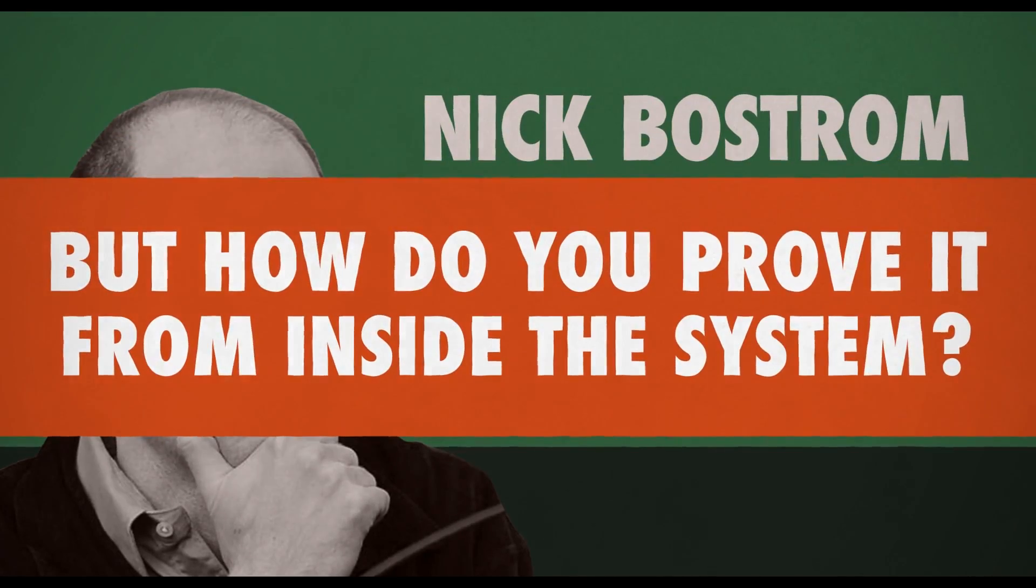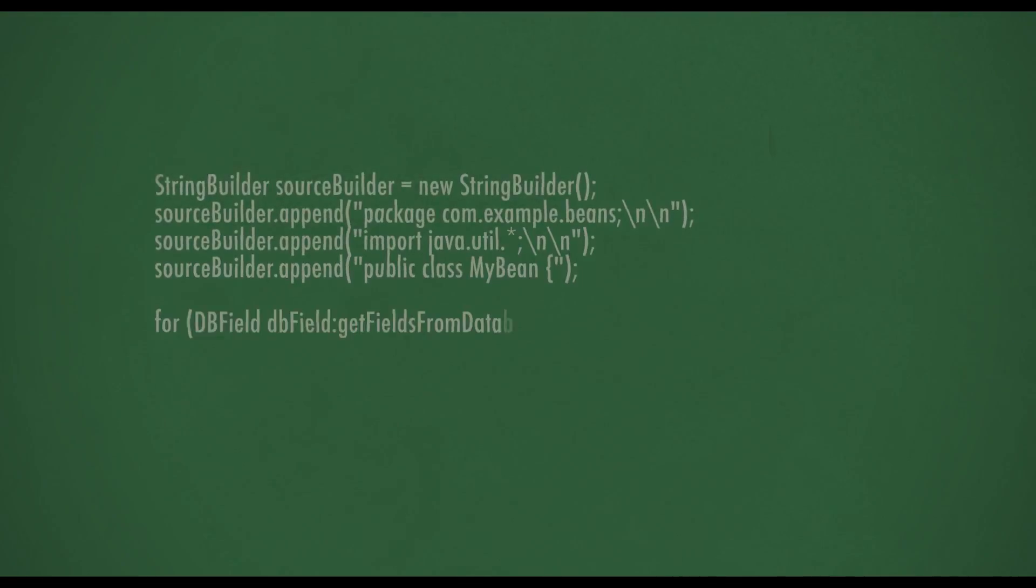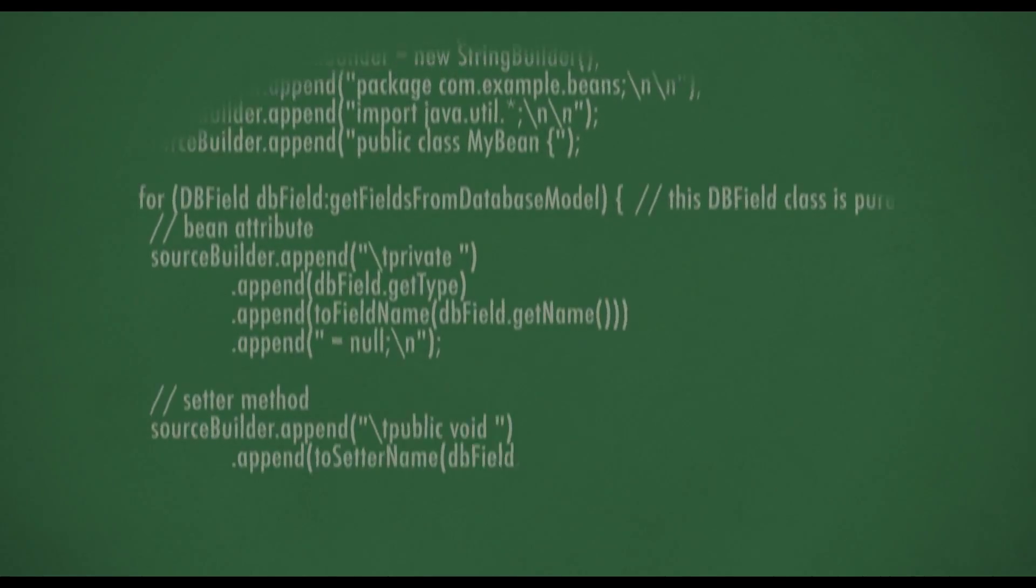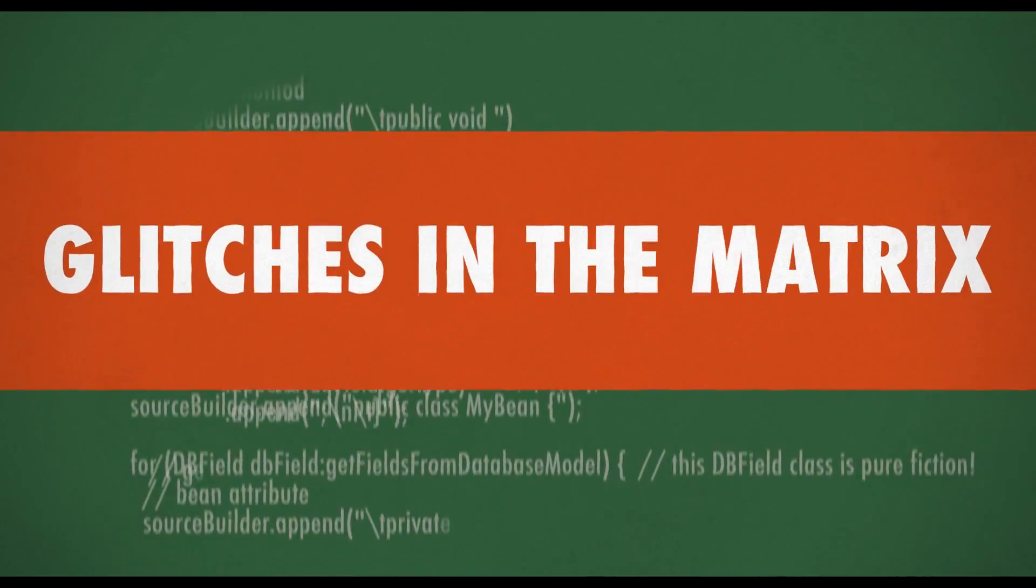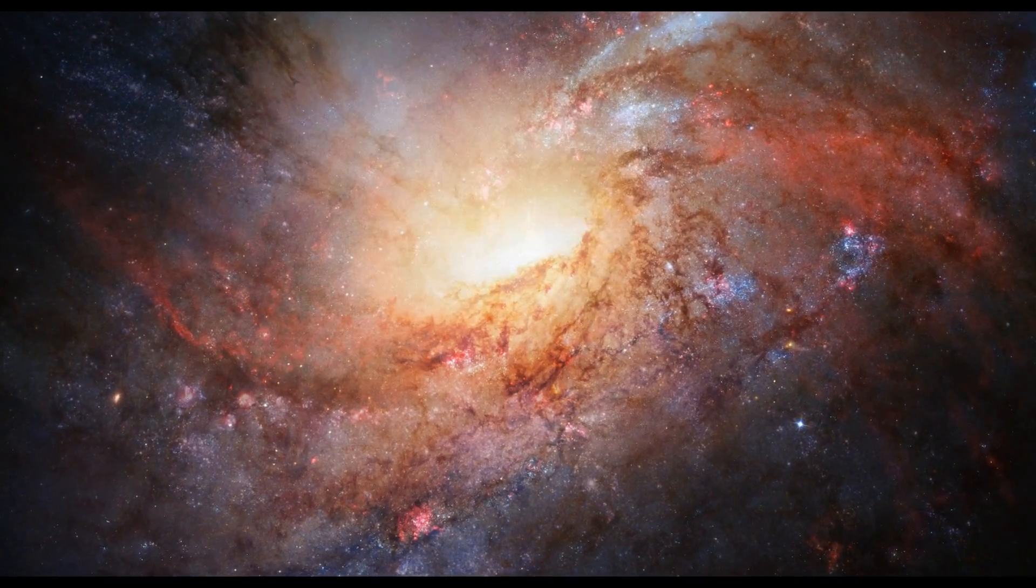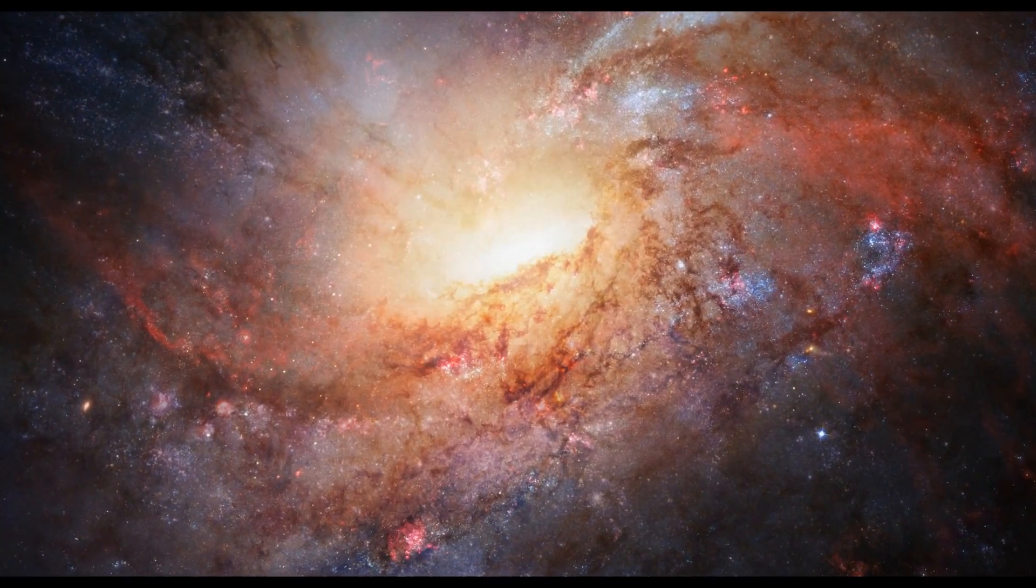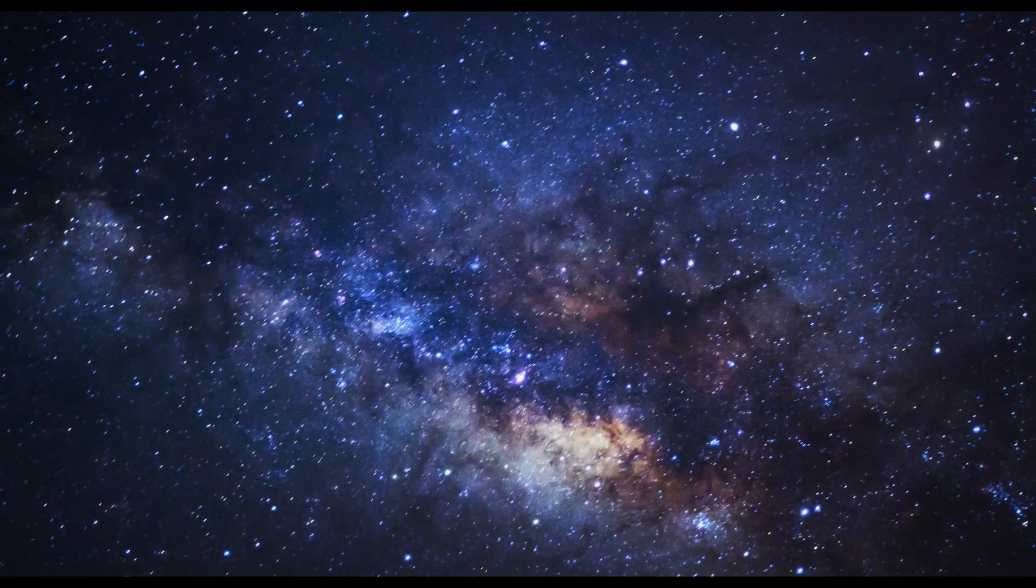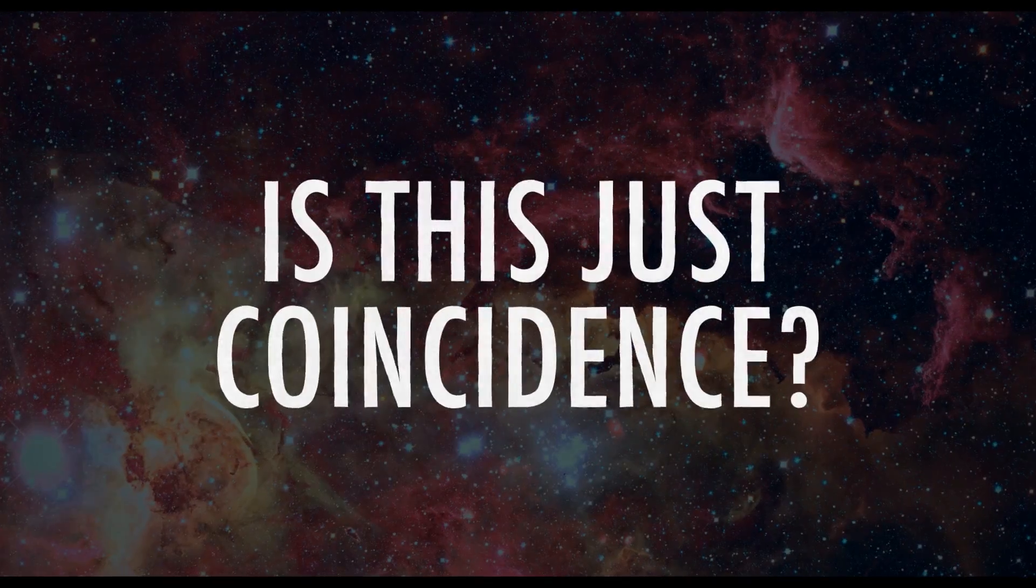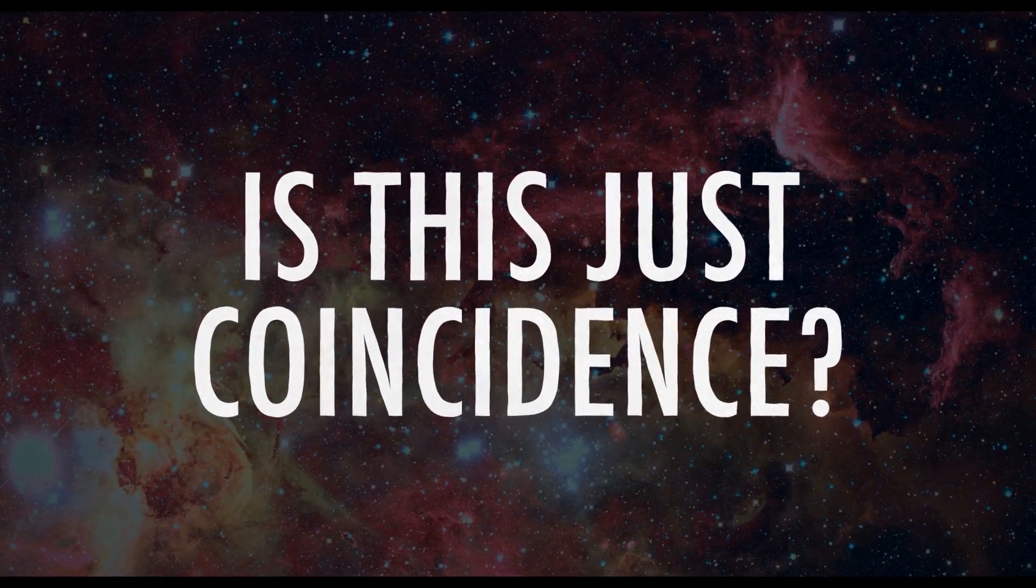But how do you prove it from inside the system? Some scientists have proposed that if this were a fabrication created by a code, there would be shortcuts taken, similar to the glitches in the matrix. Others believe that the signs are already here. The universe all around us looks so perfect in so many ways, and the competing forces seem pre-designed for life to develop. So is this just a coincidence, or a clue that a higher power is at work?